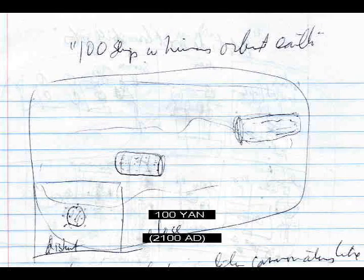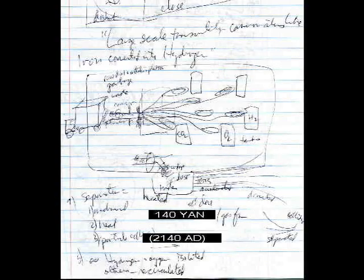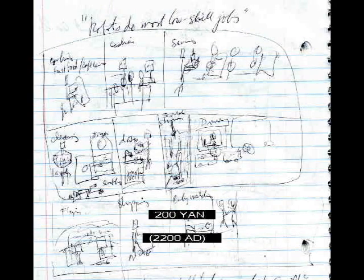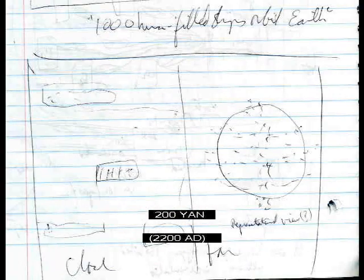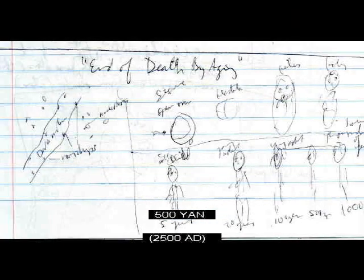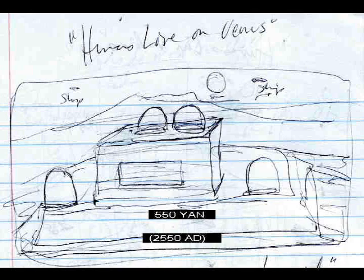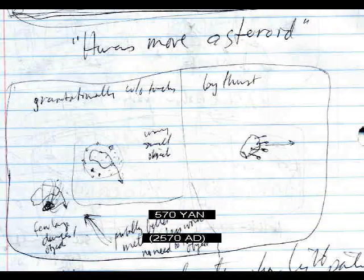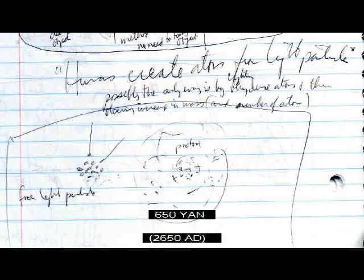Helicopter cars form a second line of traffic above the streets. 100 ships with humans orbit Earth. Large-scale transmutation — common atoms like iron converted into hydrogen and oxygen using particle colliders. Robots do most manual labor tasks. 1,000 human-filled ships orbit Earth. Humans live on Mars. End of death by aging. Humans live on Venus. Humans move asteroid. Humans create atoms from light particles.